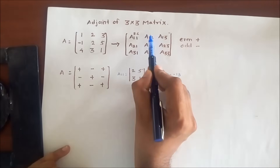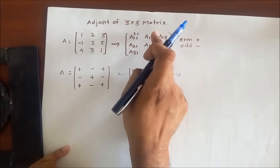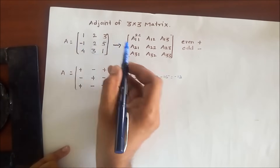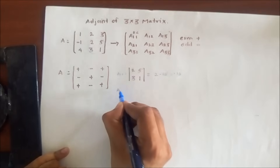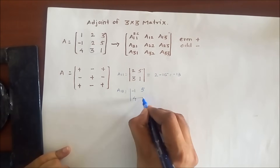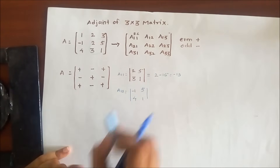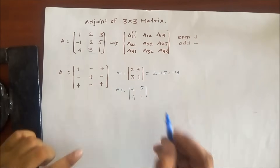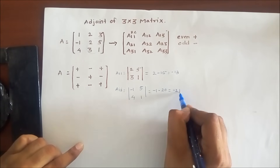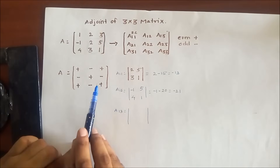The determinant of [2, 5; 3, 1] gives 2 minus 15, which equals minus 13. Now for cofactor A12, we have to hide row 1 and column 2. The remaining terms are [-1, 5; 4, 1]. So minus 1 minus 20 gives us 21 for A12. Now for A13 we have to hide row 1 and column 3.